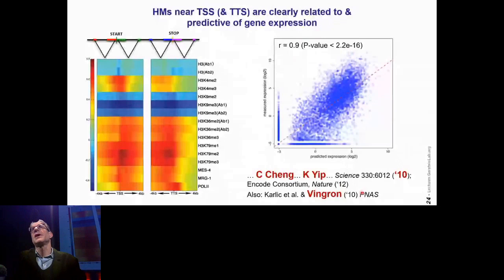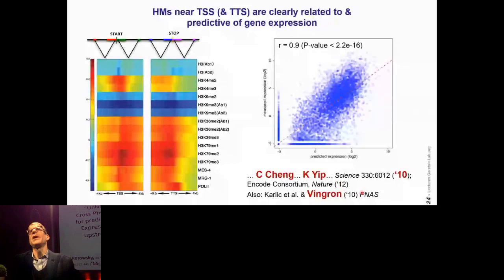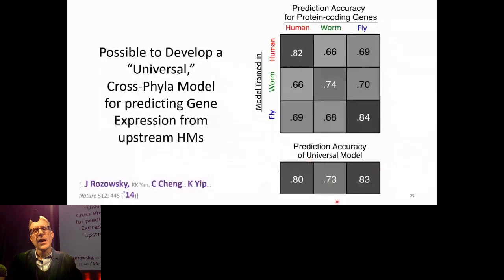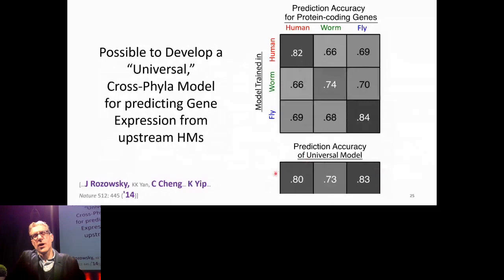I should acknowledge that Martin Vingron really did a lot of this very early work on predictive models. One thing I got very excited about was we trained models on human, worm, and fly genomes and got good predictive performance in each. When we took the human model with human parameters and applied it to the worm, it still actually did reasonably well, and we realized we could make a kind of universal model with one set of parameters that would work cross-phylogenetically across hundreds of millions of years of evolution.